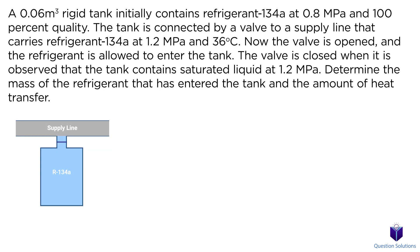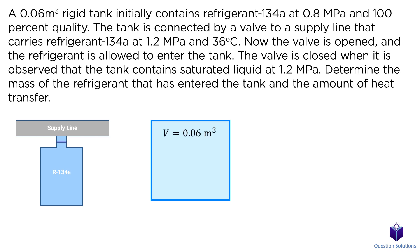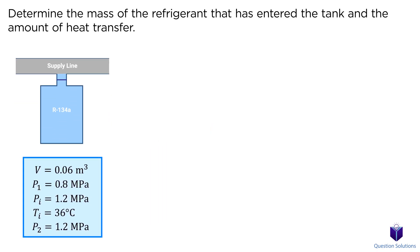Let's take a look at this problem where we have a tank that contains refrigerant R134a. The tank is connected to a supply line. When the valve is opened, R134a enters the tank. After the valve is closed, it's found that the tank contains saturated liquid at 1.2 MPa. We need to figure out the mass of the refrigerant that entered the tank and the amount of heat transfer. The volume of the tank is 0.06 cubic meters, the initial pressure is 0.8 MPa, and the supply line carries refrigerant at 1.2 MPa at 36 degrees Celsius. The final pressure of the tank is 1.2 MPa, and the tank will be our system.